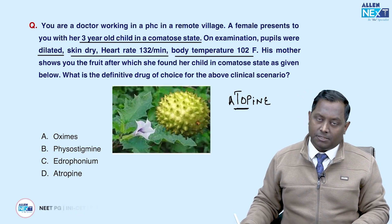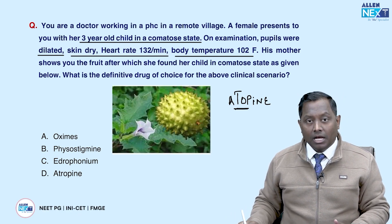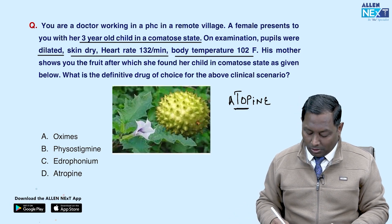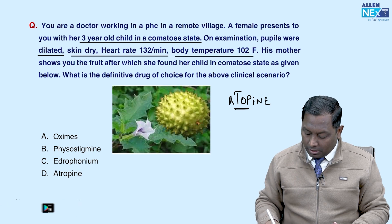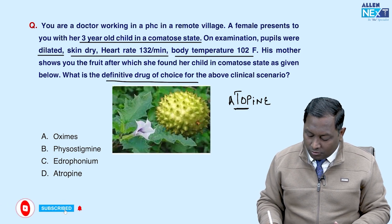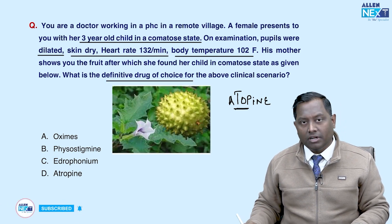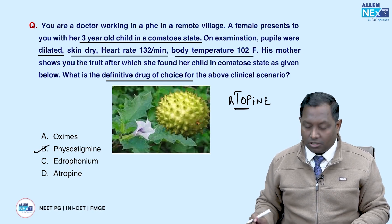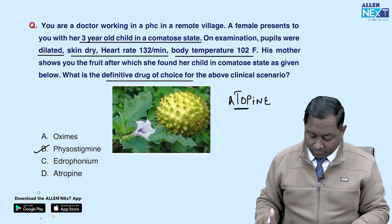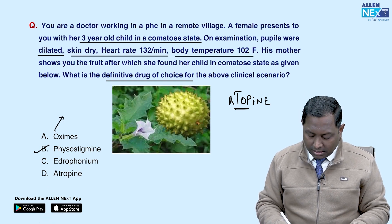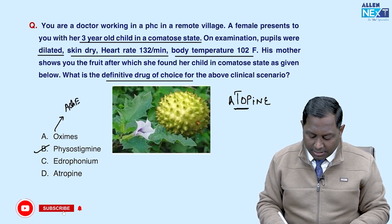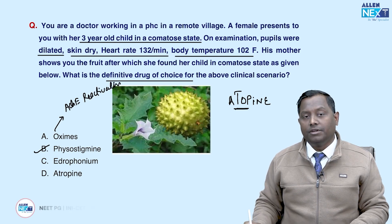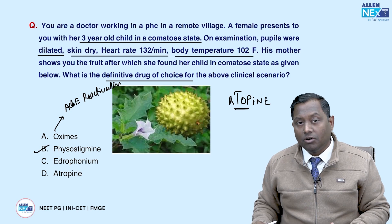In atropine poisoning, everything goes up: eyes (dilated pupils), body temperature, and heart rate. The fruit could be from Atropa belladonna. The definitive drug of choice for atropine poisoning is physostigmine. Oximes are acetylcholinesterase reactivators used after organophosphate poisoning — after atropine introduction in that context, oximes can then be utilized.